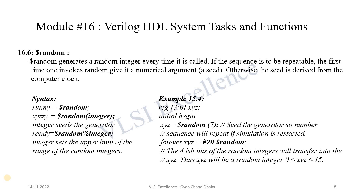First of all we are going to cover the $random system task. $random generates a random integer every time it is called. If the sequence is to be repeatable, that means if you want to repeat the sequence again, the first time you invoke $random give it a numerical argument. So basically if we want to repeat the sequence from our previous $random call, we have to give a seed value to $random when calling it, and we can repeat the same sequence multiple times.